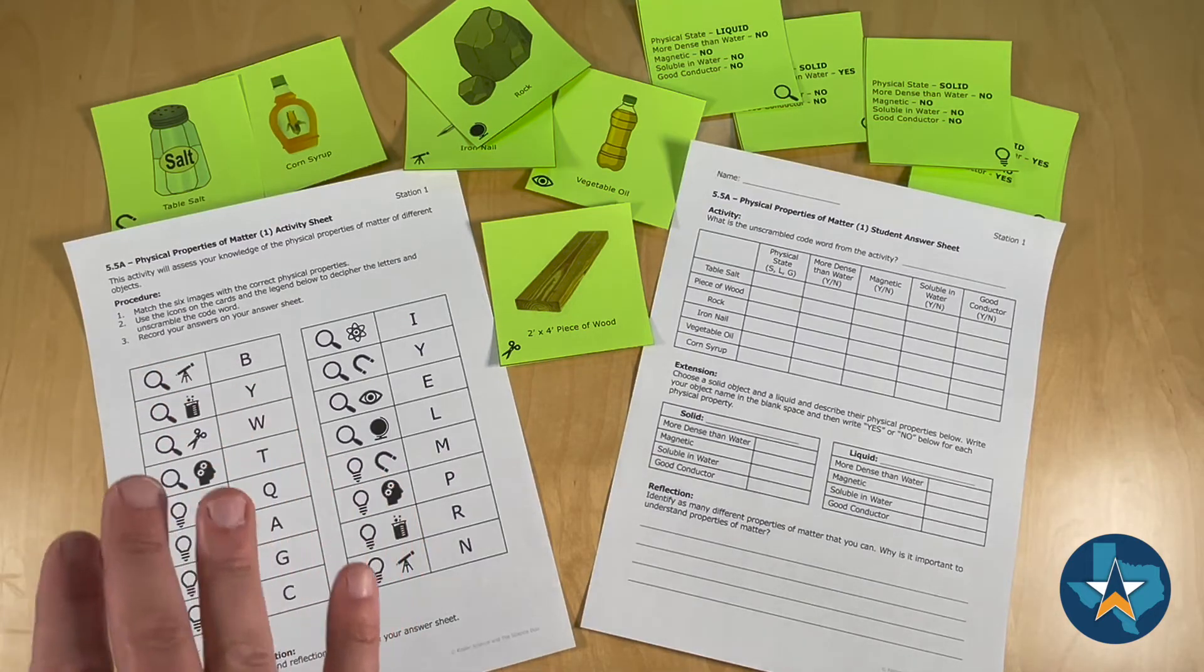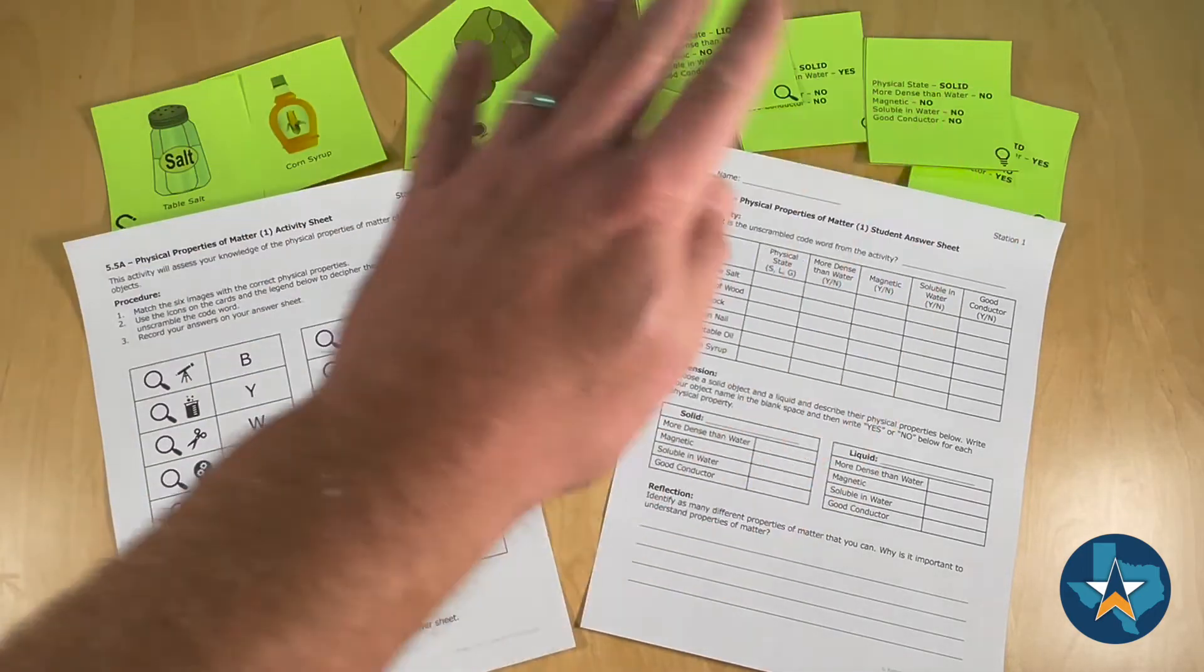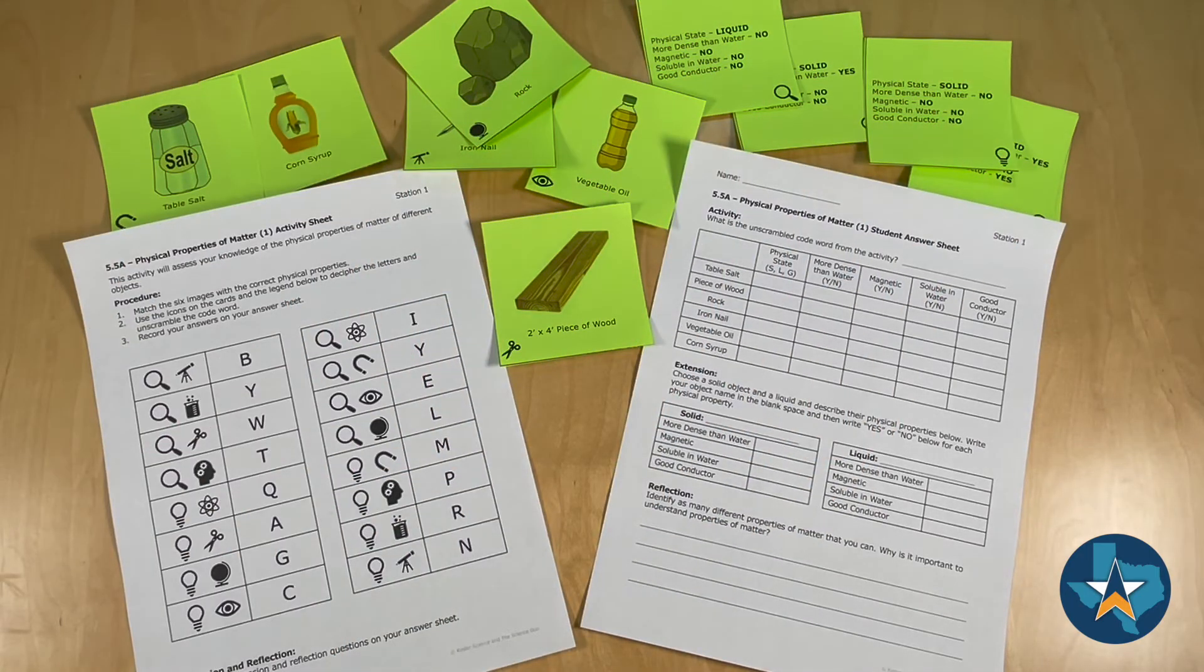On the left-hand side, you'll see the activity sheet that will stay with the station the entire time. You'll also have 12 cards. These cards came from the teacher-only sheet. We recommend cutting these out on colored paper, as you can see here.